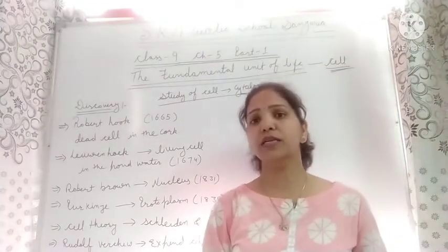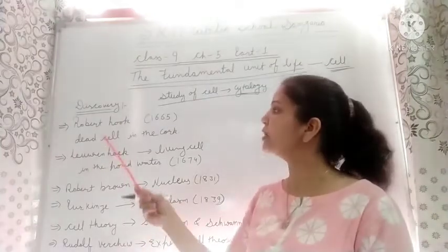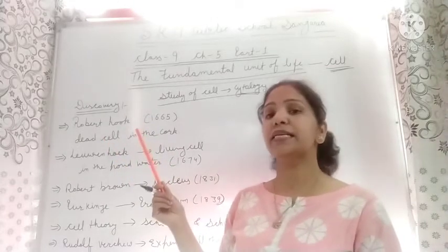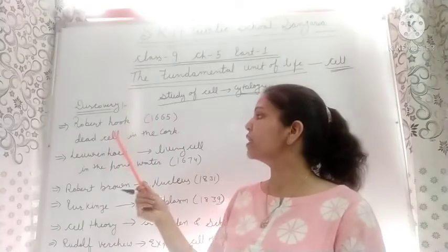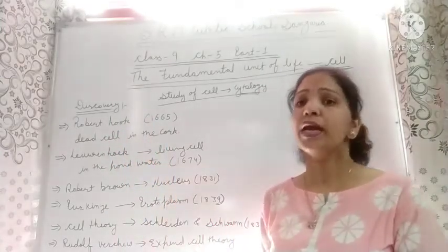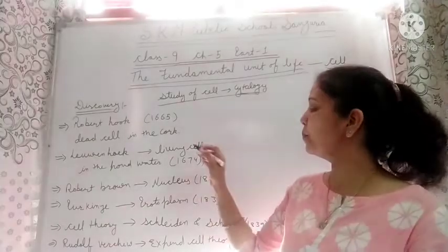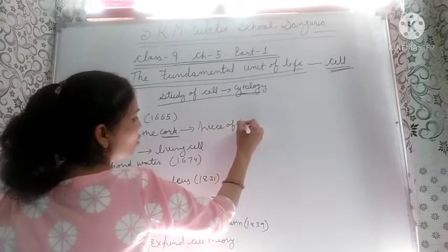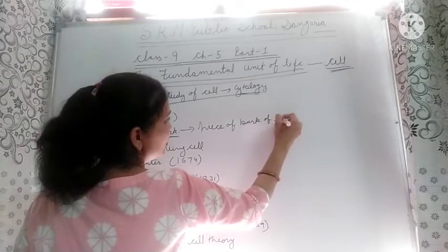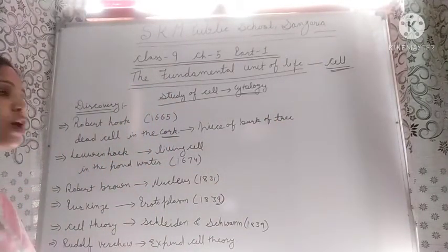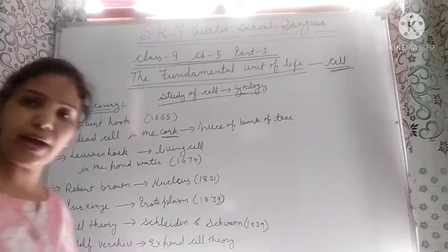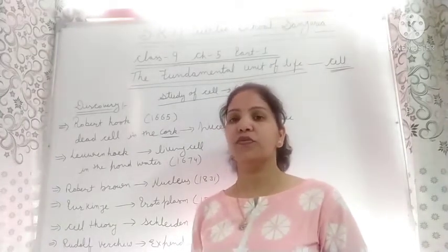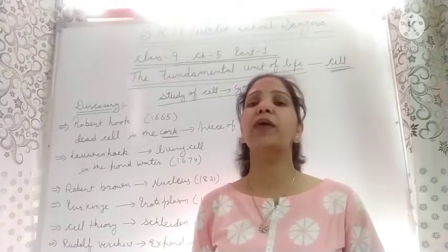The cell was first discovered by Robert Hooke in 1665. He discovered a dead cell in cork. Cork is a piece of bark of a tree. He observed the piece of cork under a self-designed microscope and saw that it resembled the structure of a honeycomb, consisting of many little compartments.